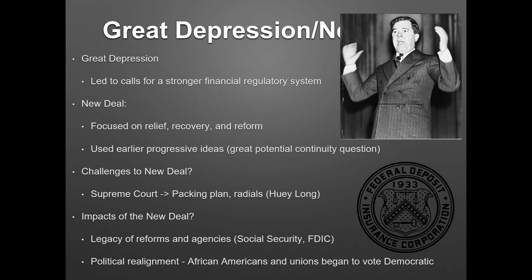What you're going to see in this time period is political realignment. African Americans are going to start to vote for Democrats — African Americans had never voted for Democrats before because the Democrats were the party of the South and racism. But especially after the election of 1936, this is when you really start to see African Americans voting for Democrats because some of FDR's programs did help African Americans. Unions had always supported the Democrats, so they continued to do this — this is the New Deal Coalition.